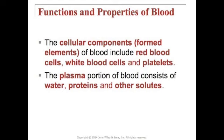The cellular components, or formed elements, of blood include red blood cells, white blood cells, and platelets. The plasma portion of the blood consists of water, proteins, and other solutes.